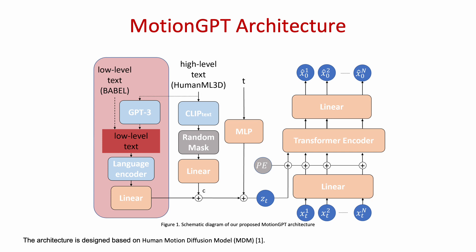During training, for the high-level description, we use the ground truth from the HumanML3D dataset, which contains text descriptions of the motion being performed. For low-level text, we generate them by authorizing and concatenating ground truth action labels from the BABEL dataset.